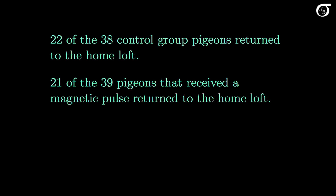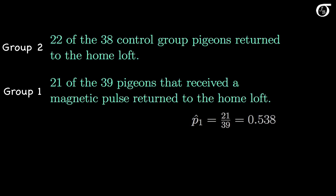Does this data give evidence of an effect of the magnetic pulse? In experiments, people often take the difference as the treatment group minus the control group, so I'm going to call the magnetic pulse group group 1 and the control group group 2. P1 hat, the sample proportion of magnetic pulse pigeons that returned to the home loft, is 21 over 39, or about 0.538.